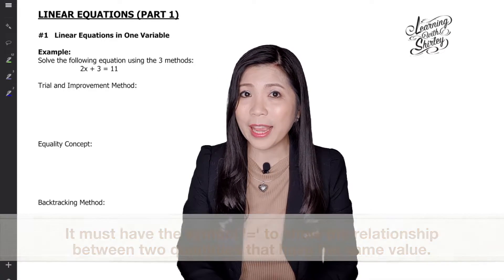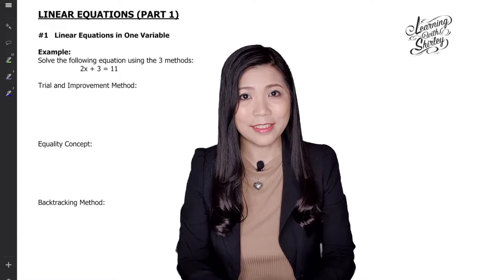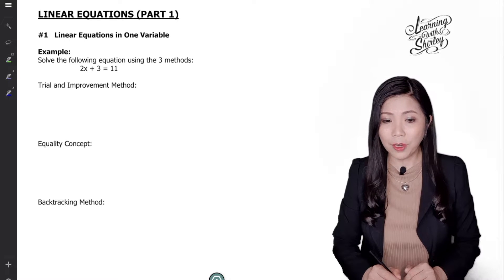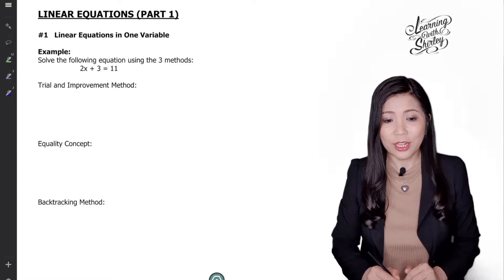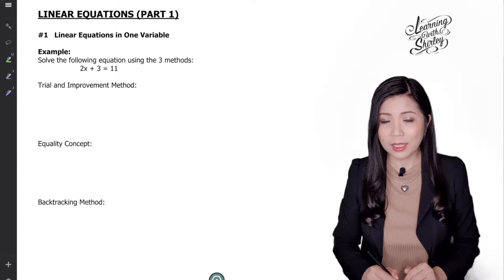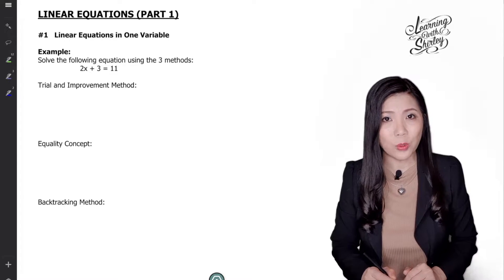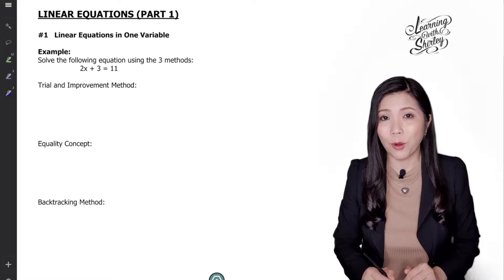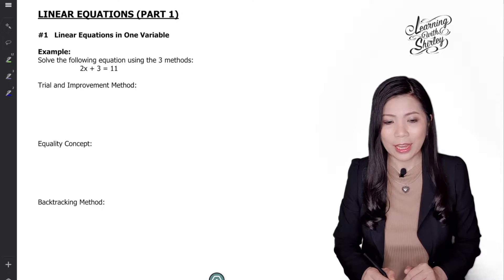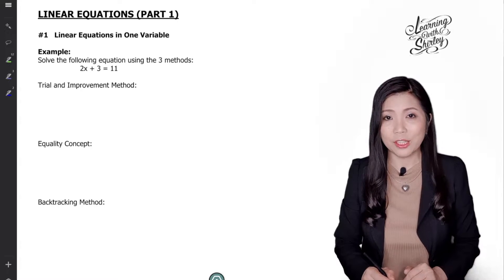Let's look at the following example. Solve the following equation using the three methods. The question is 2x plus 3 equals to 11. We're going to find the value of x. The first method is the trial and improvement method.